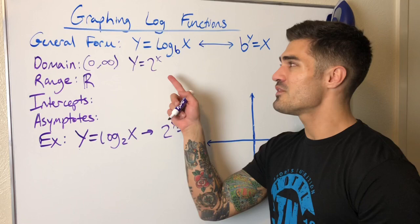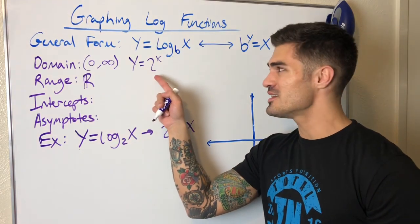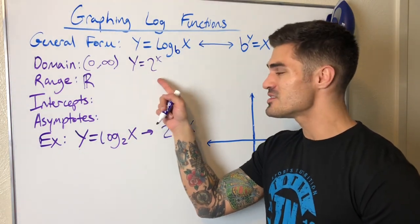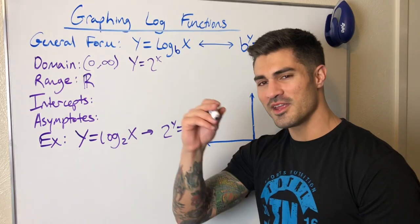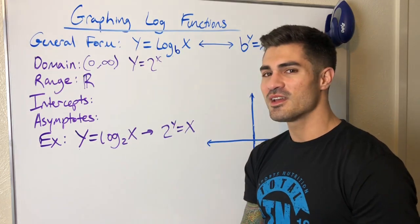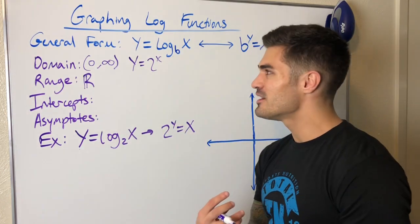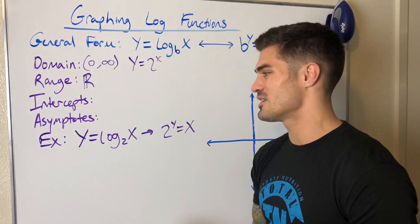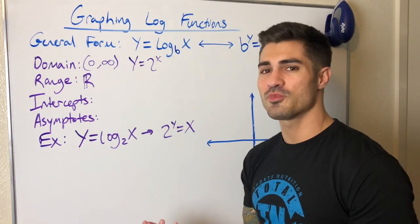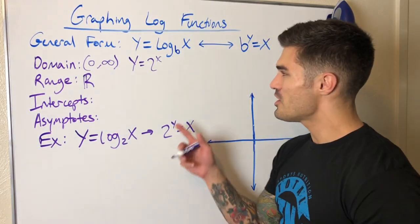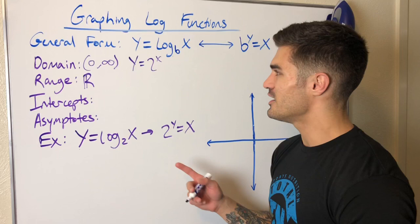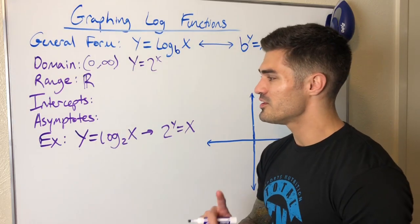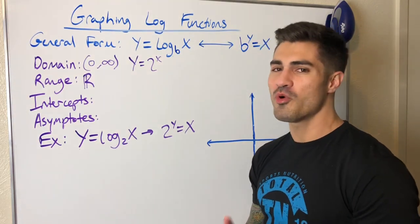The intercepts and asymptotes are a little trickier — it's not as simple as just flipping. But if I can graph the exponential function, I can draw a dotted line at y equals x and do a reflection. These two functions are symmetrical over that line y equals x. What else can we think about with a function and its inverse? They're symmetrical, and the domain and range swap.